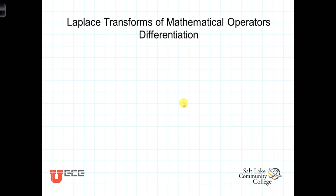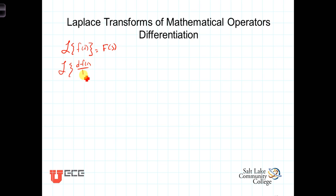We'll now consider what happens when we take the Laplace transform of the derivative of f of t. Given that the Laplace transform of f of t is equal to F of s, what happens when we take the Laplace transform of the derivative of f of t with respect to t? The answer is that the Laplace transform of the derivative of f of t is equal to s times the Laplace transform of f minus the initial value of f.